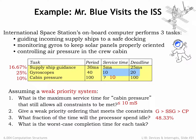Question 4: what is the worst-case delay for each task until completion of its service routine? Each task might have to wait for the longest-running lower-priority handler to complete, plus the service times of any higher-priority tasks, plus its own service time. SSG has the lowest priority, so it might have to wait for CP and G to complete — a total of 20ms — then add its own service time of 5ms, for a worst-case completion time of 25ms after the request.